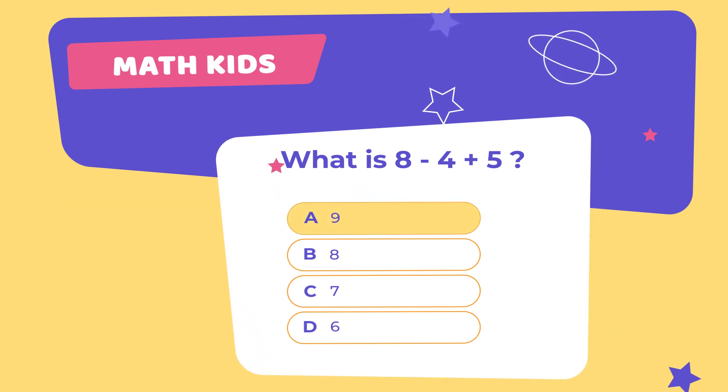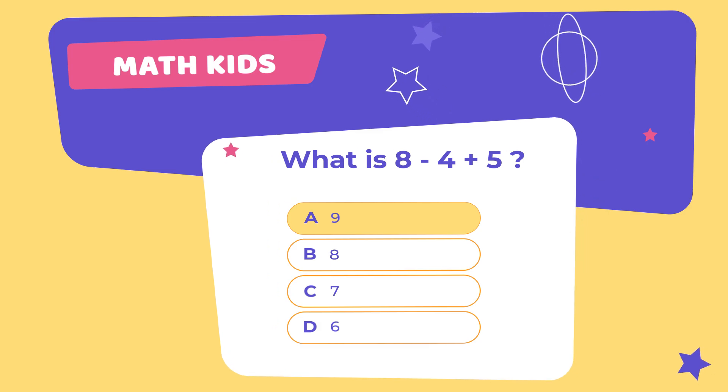You're right! Your answer is correct! Emma starts with 8 stars. She gives 4 stars to her friend, so now she has 4 stars. Then, she finds 5 more stars. How many stars does Emma have now? Let's count together. 1, 2, 3, 4, 5, 6, 7, 8, 9. Yes! Emma has 9 stars now!